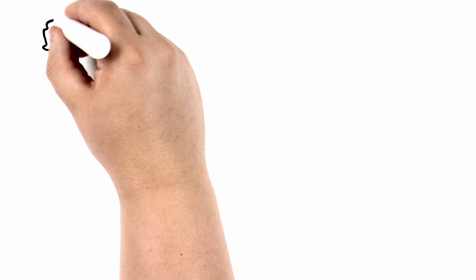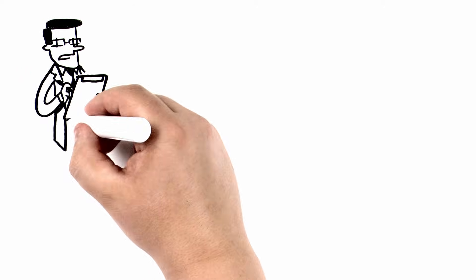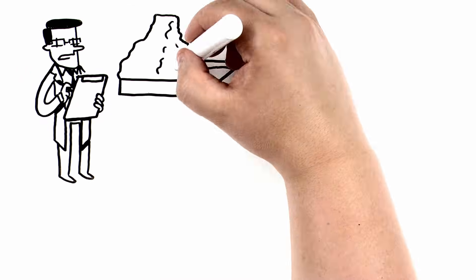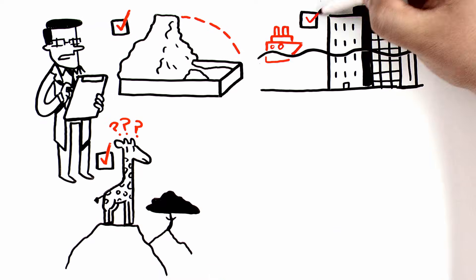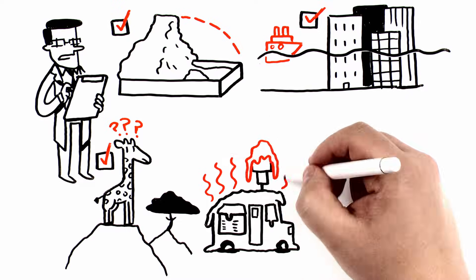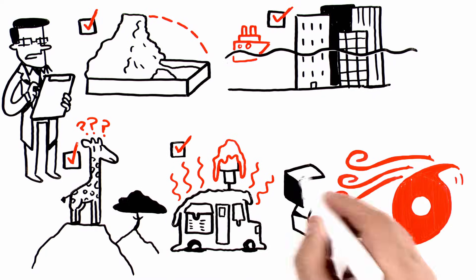Here are some other possible symptoms of planetary fever. Shrinking glaciers. Shifting plant and animal ranges. Sea level rise. More intense heat waves. Stronger hurricanes.